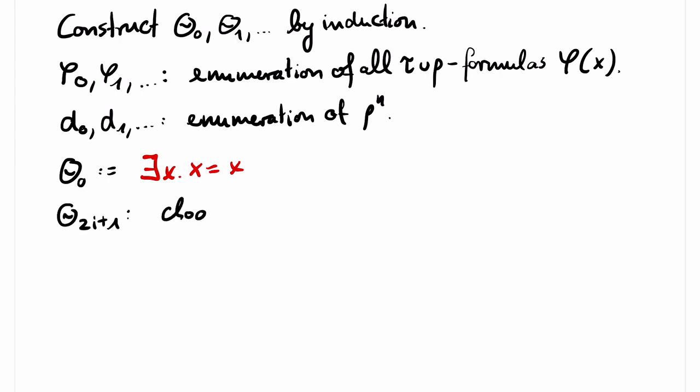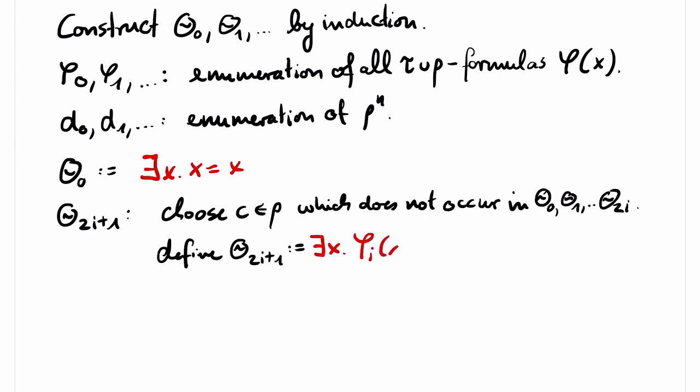For odd indices 2i plus 1, we choose a constant symbol from rho which does not occur in the previously defined sentences theta 0 up to theta 2i. Define theta 2i plus 1 to be the sentence that states, if there exists an x such that phi i of x, then phi i holds for the constant c. In other words, we make sure that c is a witness for phi i if such a witness exists. Clearly, T union all the thetas that we have defined so far is satisfiable.